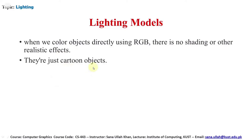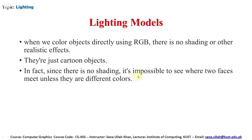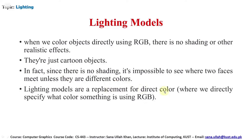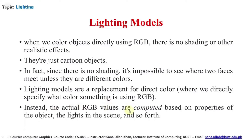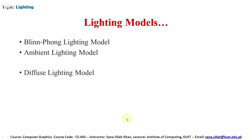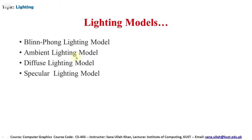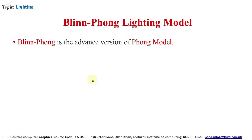If we color an object directly without any shading or realistic effects, the object will look like a cartoon. In fact, since there is no shading, it is impossible to see where two faces meet unless they are different colors. So a lighting model is a replacement for directly specifying color using RGB. Instead, the actual RGB values are computed based on properties of the object and the light in the scene. Basically there are four models: Blinn-Phong, ambient, diffuse, and specular lighting models.